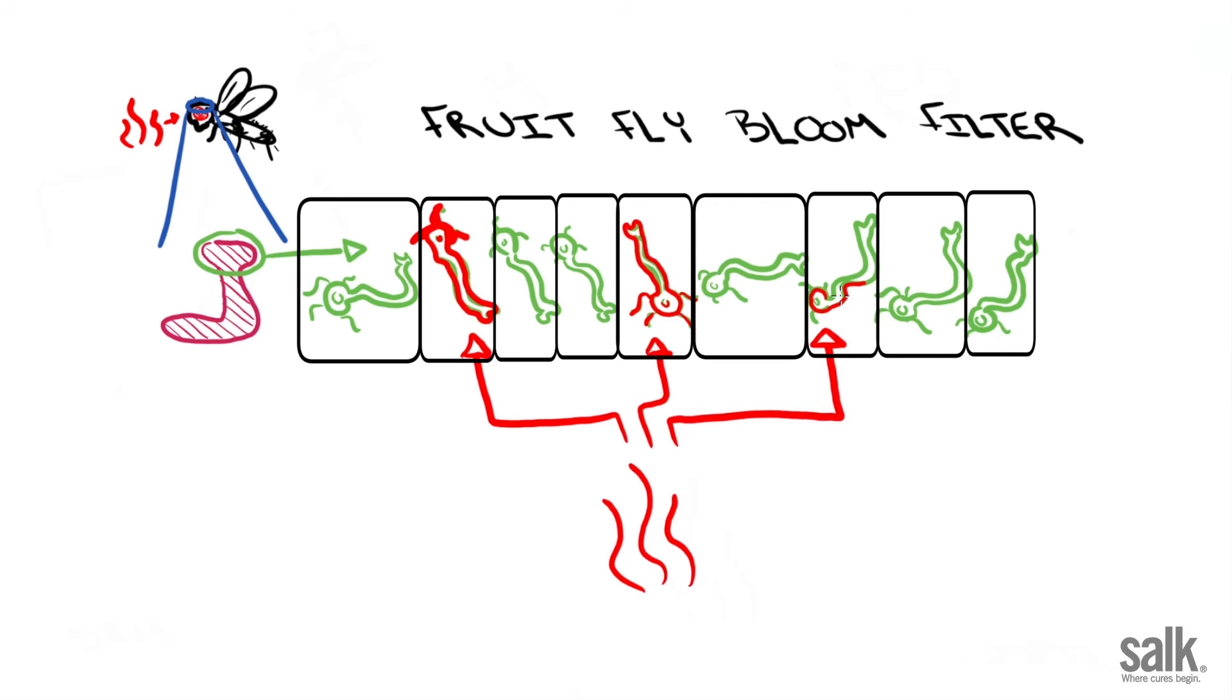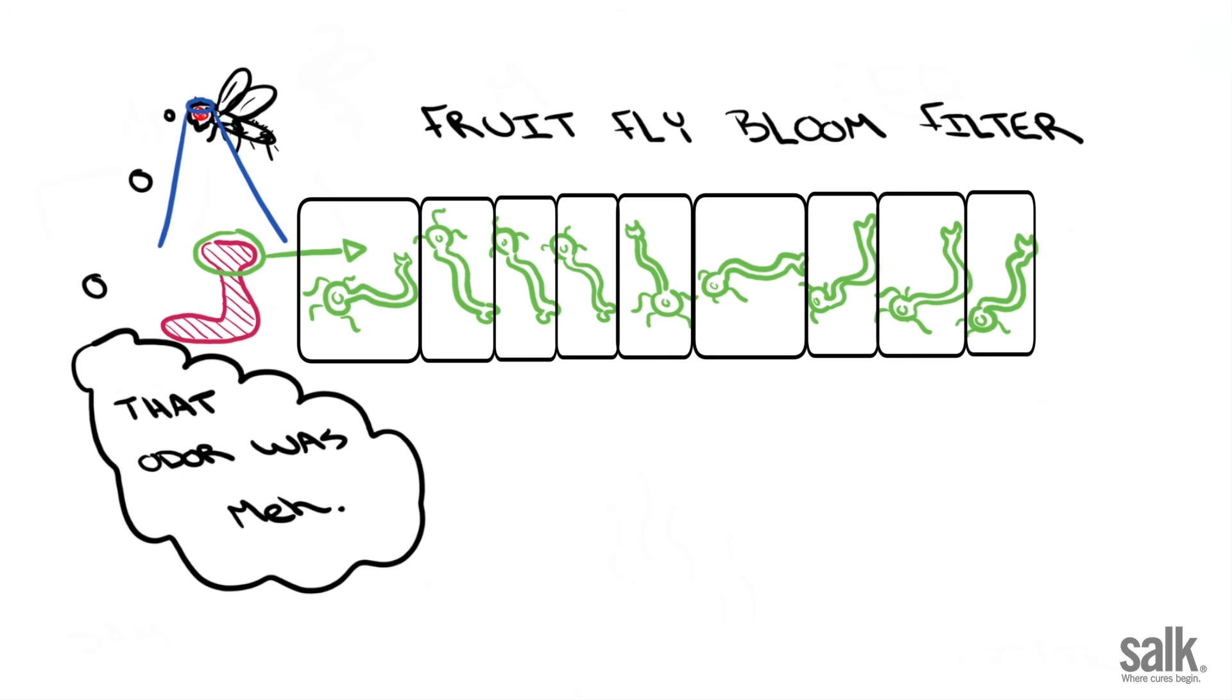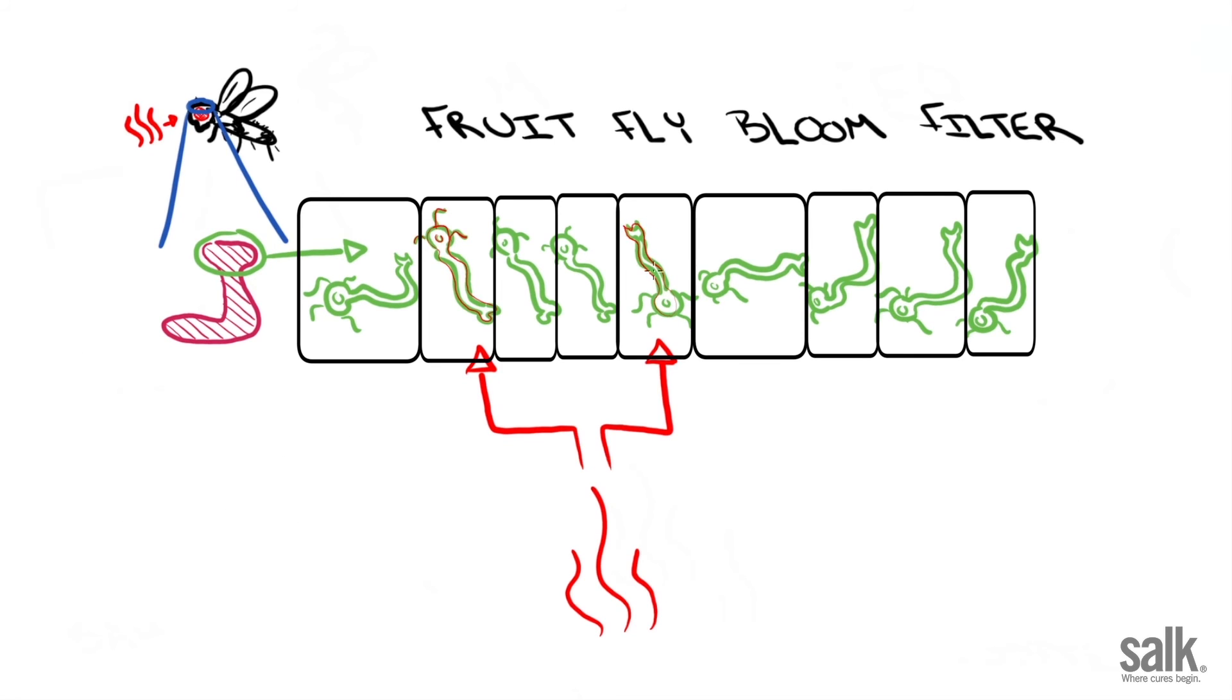The fly's mushroom body novelty signal is generated using a fingerprint for odors akin to the Bloom filter's data fingerprint. When flies experience a new odor, mushroom body neurons broadcast a novelty alert signal so the fly knows that this odor is new and worth investigating. If the odor doesn't have a strong impact, the next time it's experienced, the strength of the alert signal is reduced and the fly doesn't waste time investigating that odor.